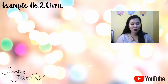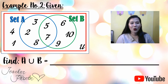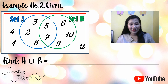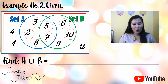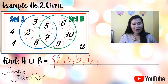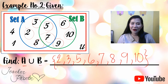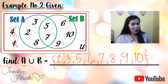Let us have Example 2. Given a universal set with two sets, set A and set B, with the following elements — what is the union of A and B? To get the union, just list down all the elements found in A and in B. Therefore our answer would be: two, three, five, six, seven, eight, nine, ten. What about four and one? They are outside the two circles, so you are not going to write them.